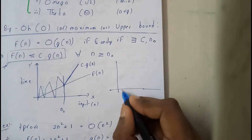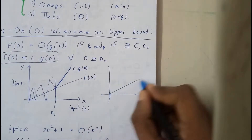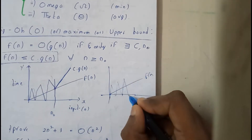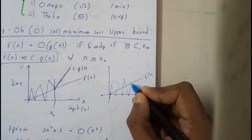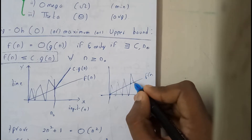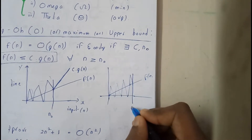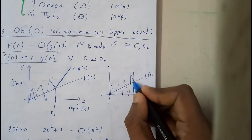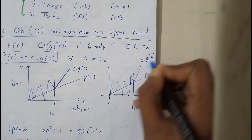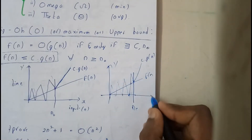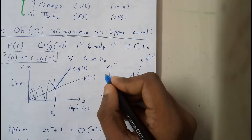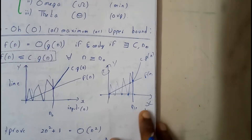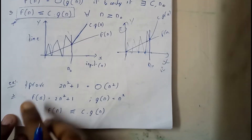Now we will draw a graph. Our normal curve will be f(n) — this represents the program variation. It ends at some point, which will be our n₀. From n₀ onwards, f(n) is less, and c·g(n) will be at the top of it. The x-axis is input and the y-axis is time variance. I hope you got a small idea of Big O from this.